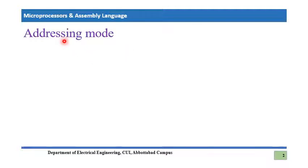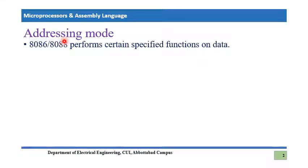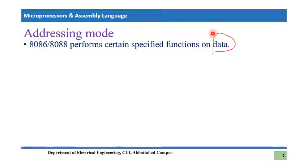Let's start our topic: addressing modes. We know that the 8086 can perform various operations on different kinds of data, so the microprocessor has to deal with different types of data and access data from different places. There can be certain variations in the methods by which we use or fetch specific information. Addressing mode is concerned with the ways we can actually fetch this data.